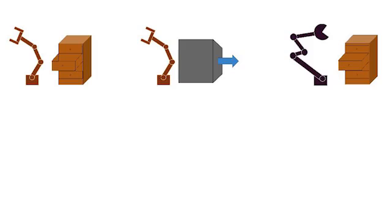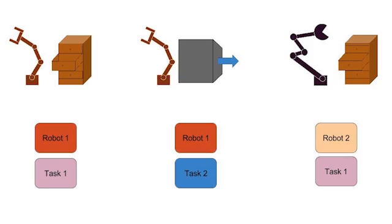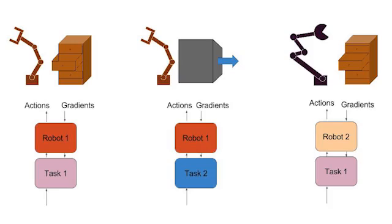Our goal is to train modular policies on a subset of all possible robot-task combinations, such that the modules learned perform well in the remaining combinations without additional training. We refer to this as zero-shot performance. Given these robot-task combinations to train on, we compose the appropriate modules to make three policies. Note that the modules of the same color have tied weights. We train the modules end-to-end using standard backpropagation.